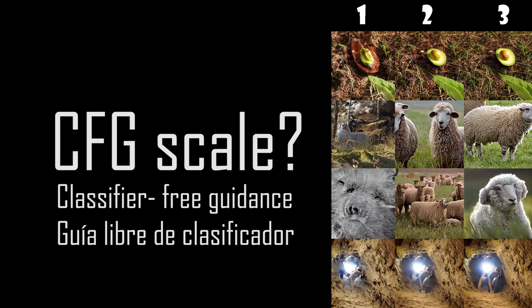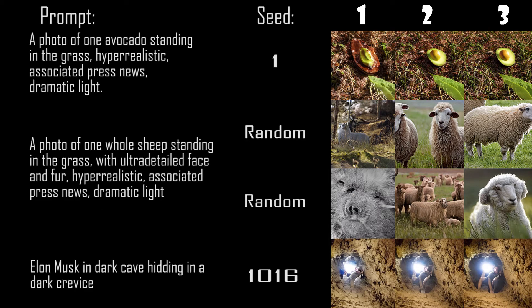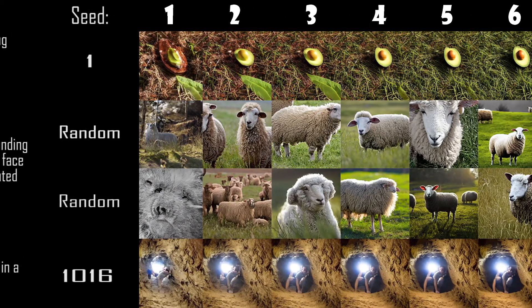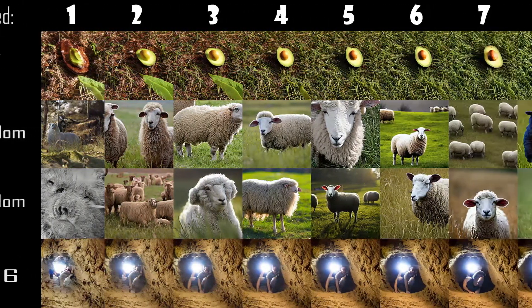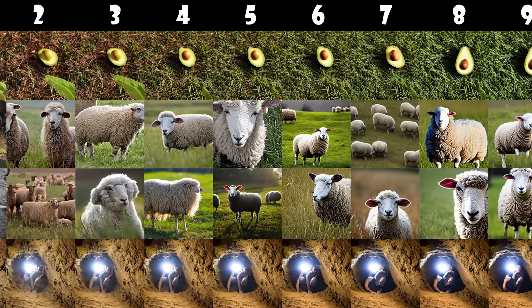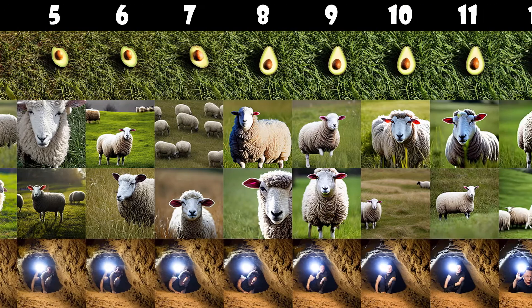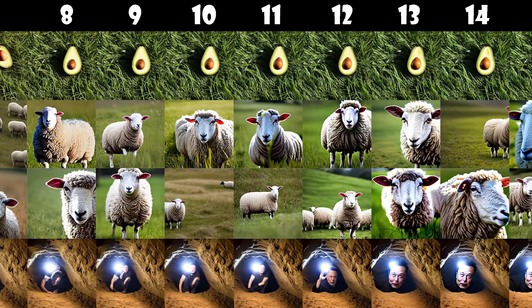So what is CFG scale again? Before starting to define it, we're going to watch some images which have the same variables except in the chipmunk's case, which has a random seed. This is how we see that while the CFG scale value increases, the image gets closer to the prompt, but with worse quality and some glitches.